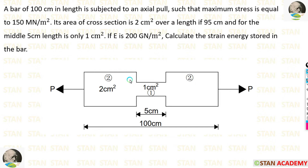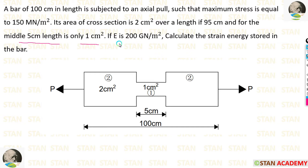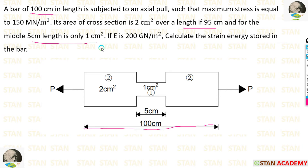The middle portion is the smallest because we have the lesser area. If Young's modulus E is 200 giga newton per meter square, we have to calculate the strain energy stored in the bar. The middle portion has 1 centimeter square area and the remaining 95 centimeter length has a cross section area of 2 centimeter square.